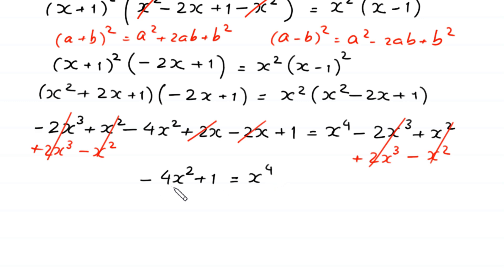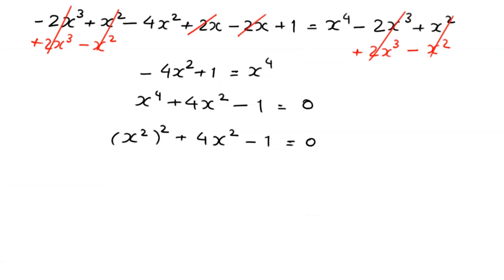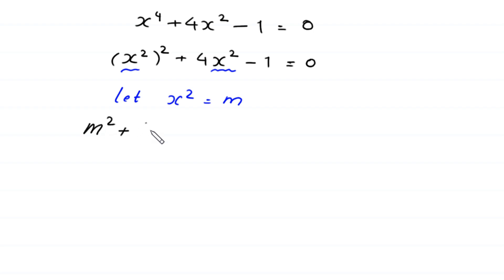Moving −4x² and +1 to the right side, the equation becomes x⁴ + 4x² − 1 = 0, which can be written as (x²)² + 4·(x²) − 1 = 0. We substitute m = x², giving m² + 4m − 1 = 0.